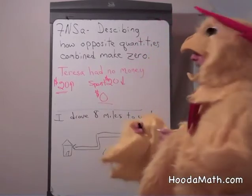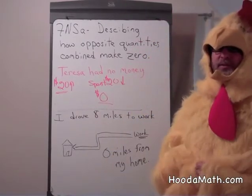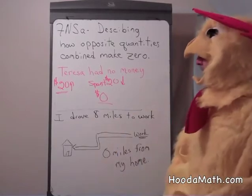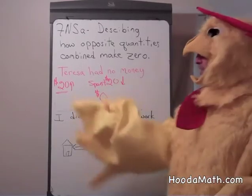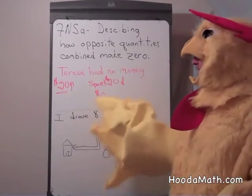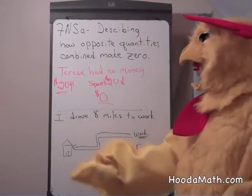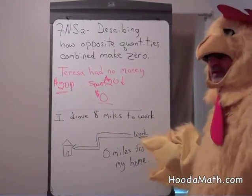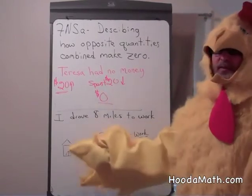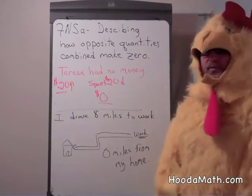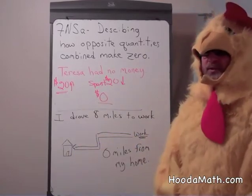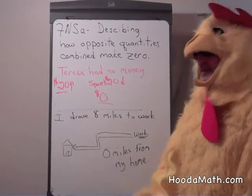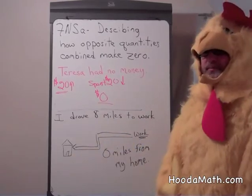When we combine opposite operations, we get zero. She received $20 and she spent $20. I drove eight miles to work, and then I drove back eight miles. I'm back at the original destination, original place — my home. I'm zero miles from my home.